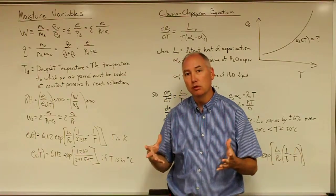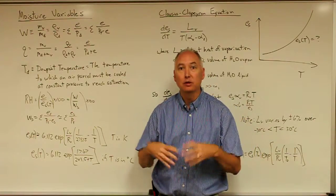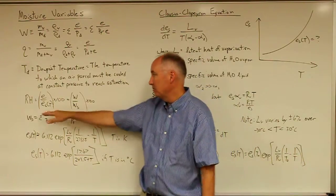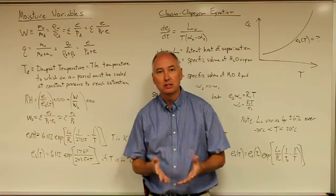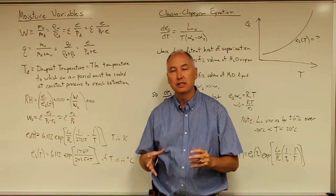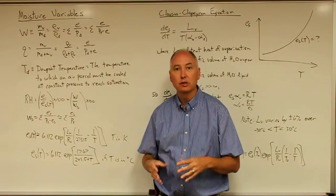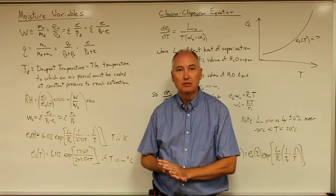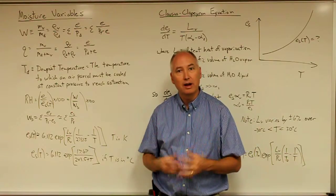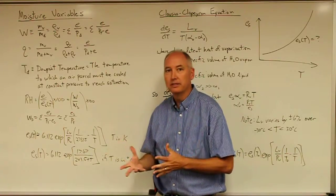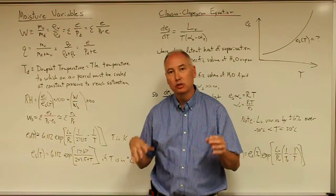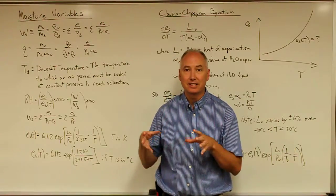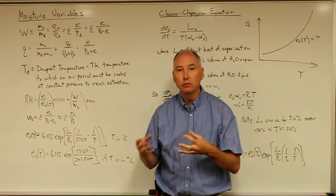A cloud will form when the relative humidity reaches 100%, or the air becomes completely saturated. You're probably very familiar with the concept of relative humidity, which is essentially a variable telling you how close you are to saturation. 0% relative humidity means you have a dry air parcel, and 100% relative humidity means you're completely saturated and no more water vapor can exist in the vapor form without condensing.